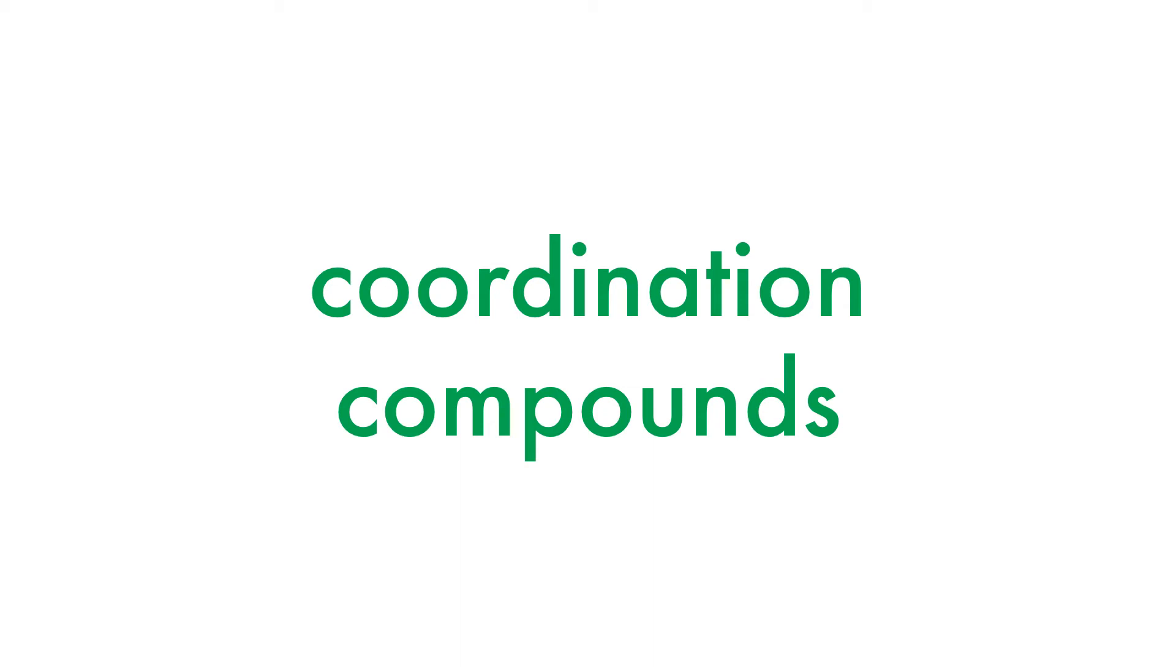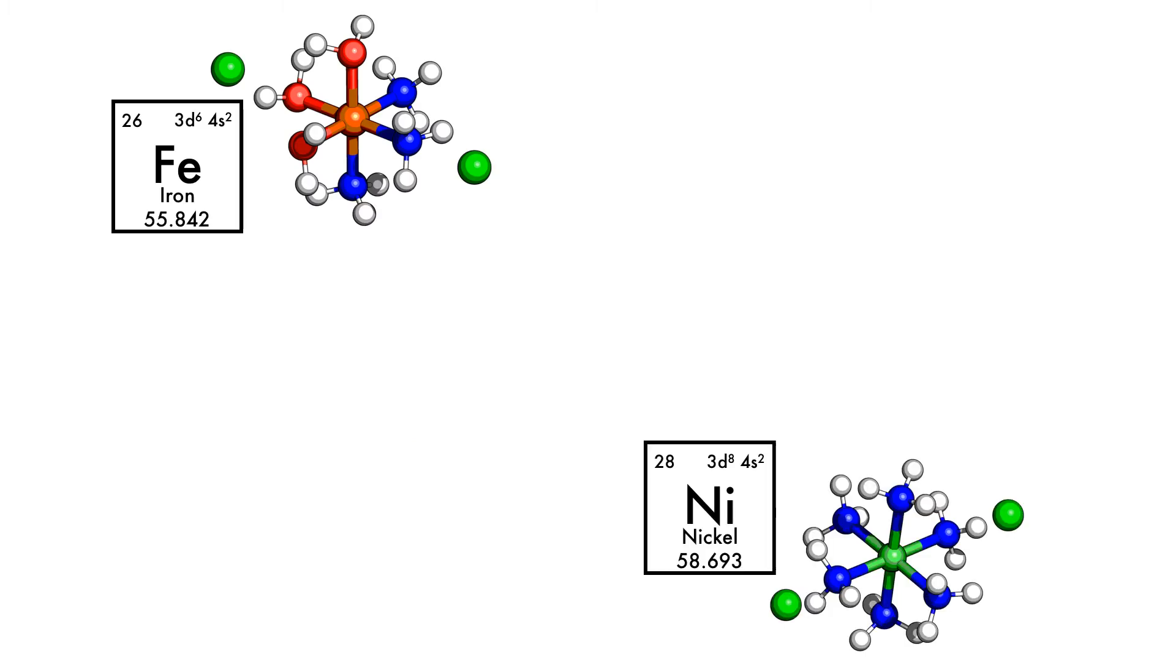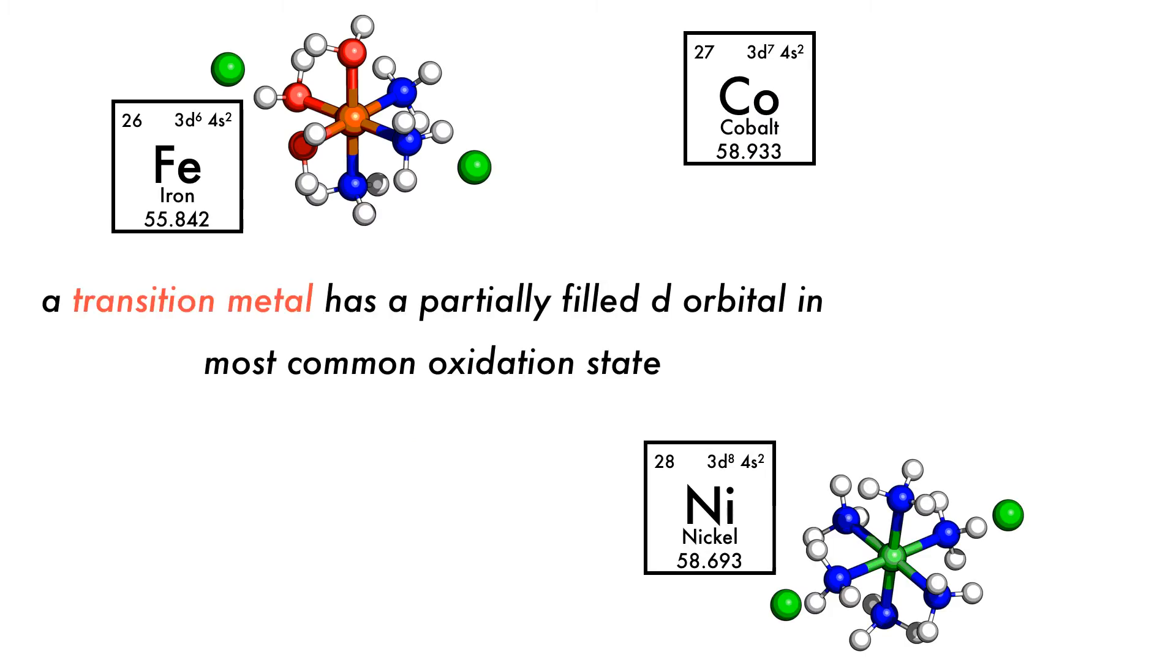It's Professor Adam. Let's talk about coordination compounds. What are transition metal elements and what makes them so special? A transition metal element is any element that has a partially filled d orbital in its most common oxidation state.